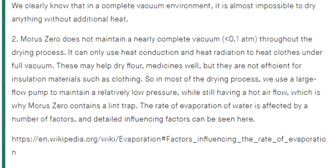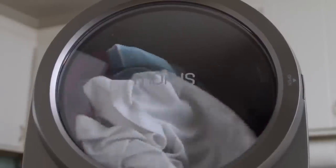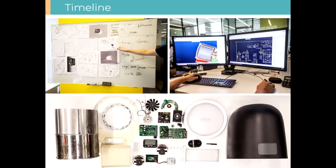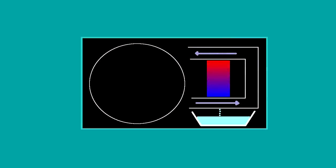So in most of the drying process we use a large flow pump to maintain a relatively low pressure while still having a hot air flow. Which is why Morus Zero contains a lint trap. What? You're going to use hot air now? I thought it was going to use infrared light to do the heating. Combined with its infrared heating system, it can dry your clothes in as little as 15 minutes. What? You mean having a relatively large air flow of hot air to heat the clothes? You mean like in a regular tumble dryer? Hey, look at the teardown. No apparent vacuum pumps. No apparent vacuum vessel. Hell, it was only when I got down to thinking about this that it suddenly came to me that what the hell is the deal with that water trap? How are you going to get the water out of a vacuum chamber without actually having a hole in the vacuum chamber? A little hole in the vacuum chamber and your vacuum's gone. I mean that's it.